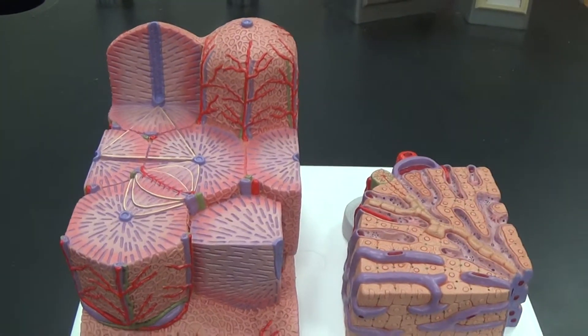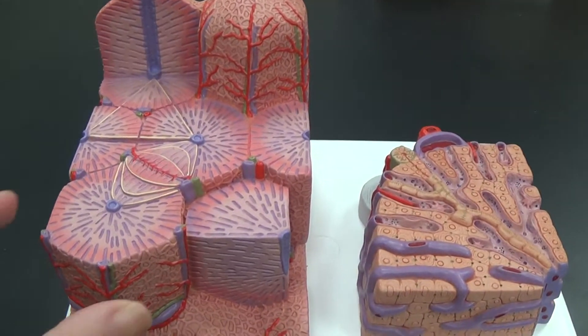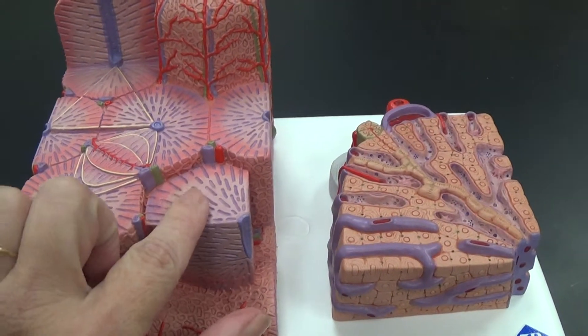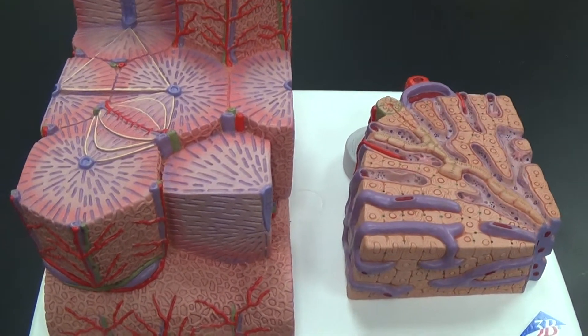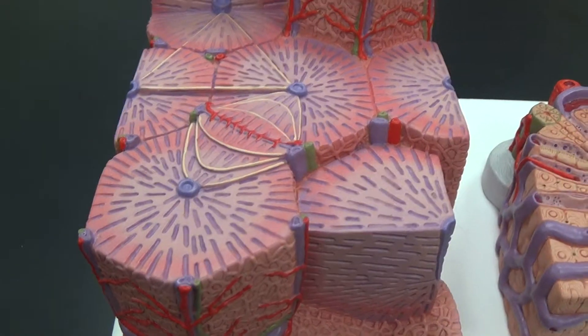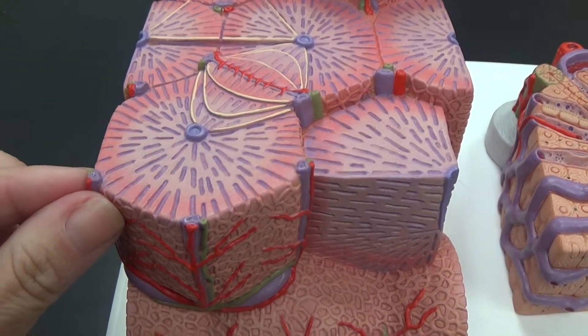I'd like to show you the liver model today. Now, this is a lobule, as is this, and you have parts of lobules here. In the center, first of all, notice that hexagonal shape, and at the corner of each we have a portal triad.